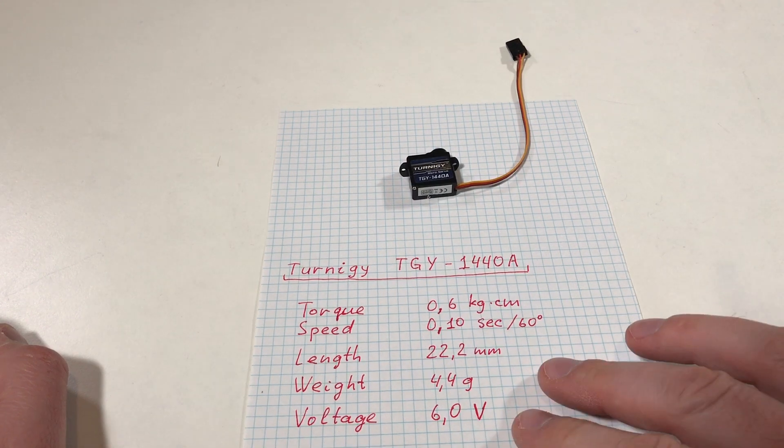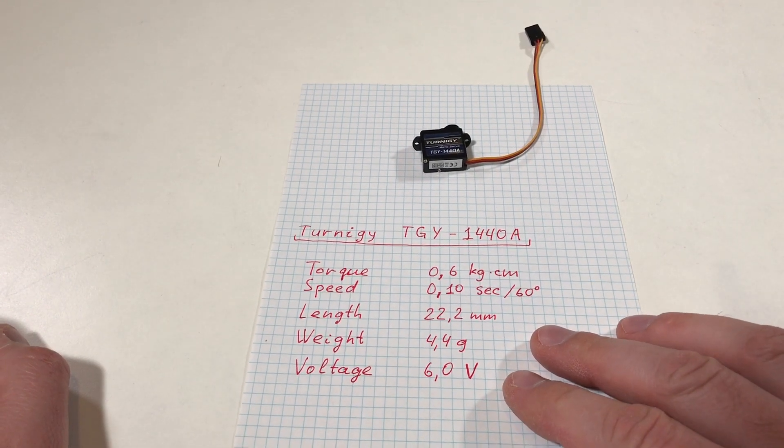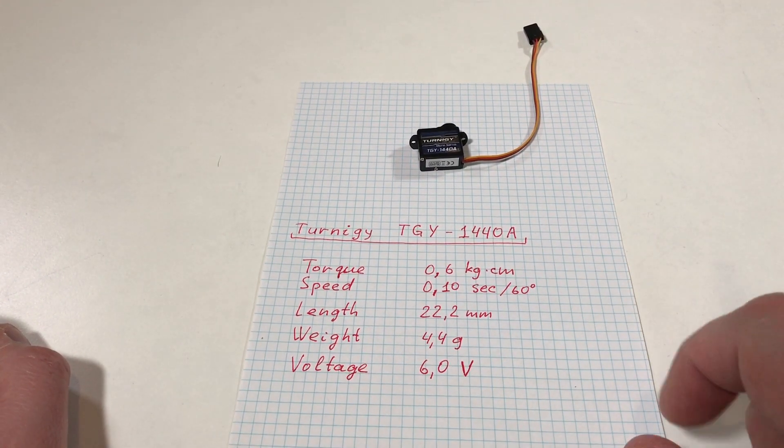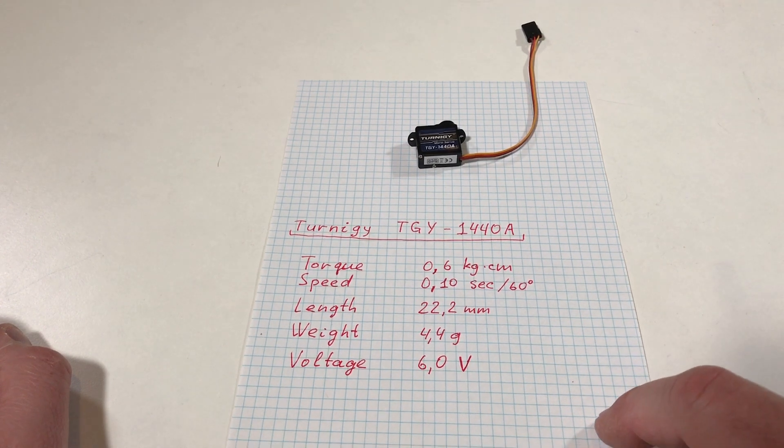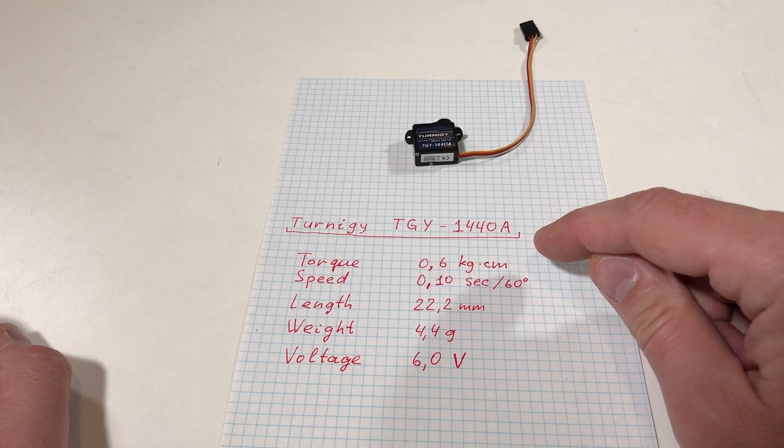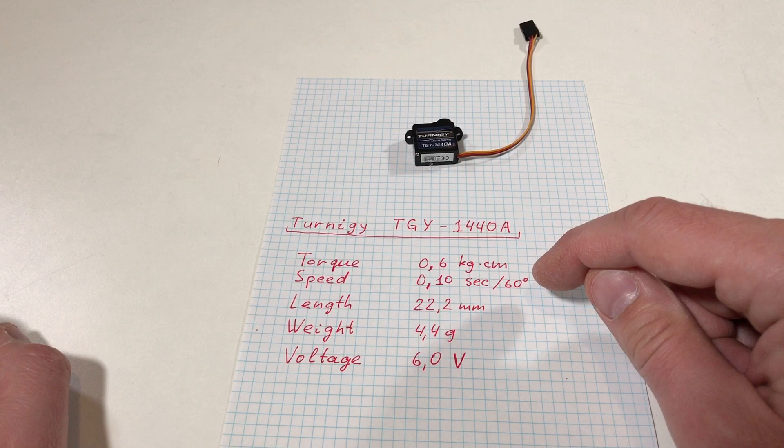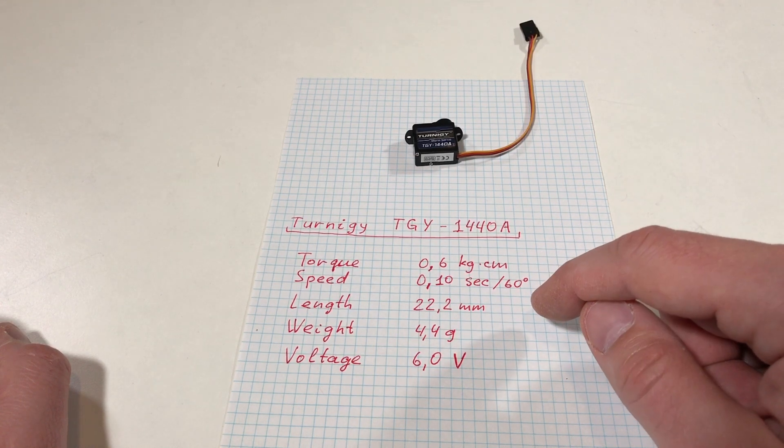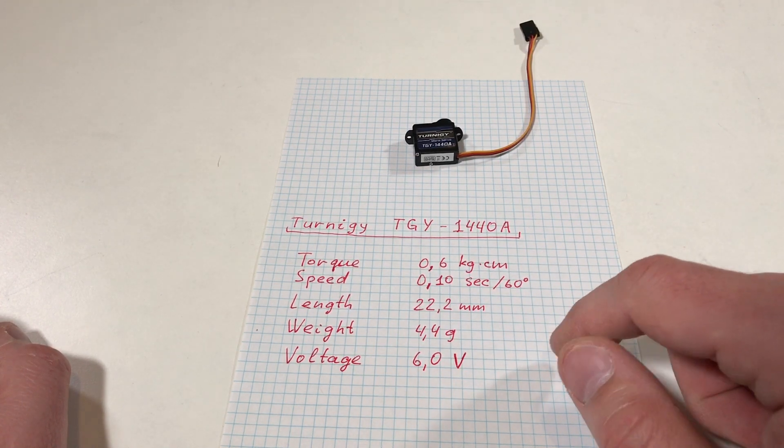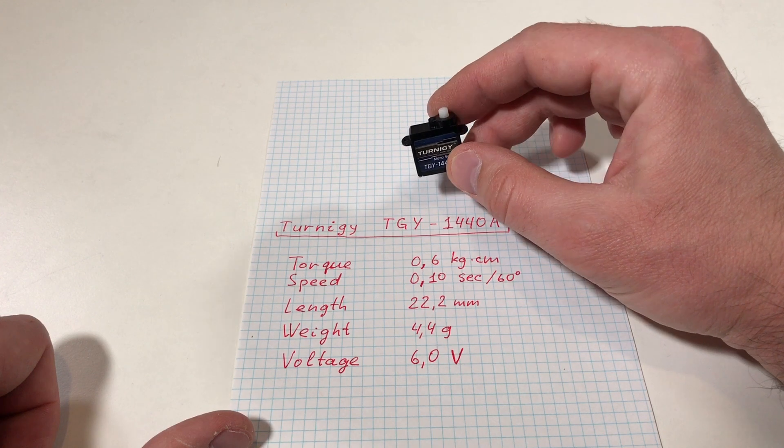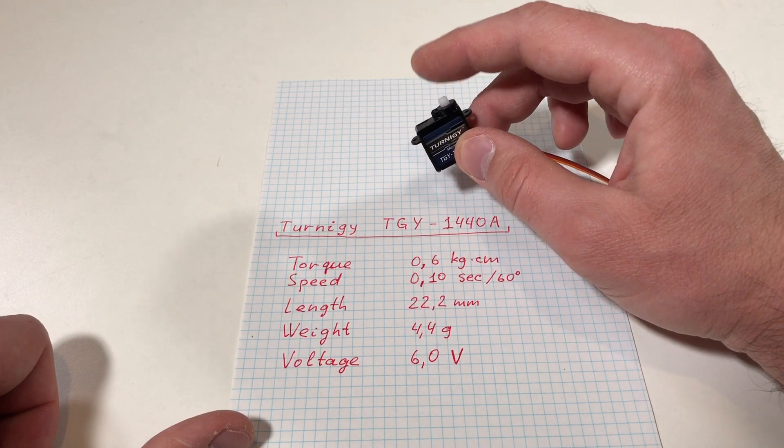The next servo motor is this one, nothing special about it. This one is a rotational servo motor, it's not linear. It has a very low torque of 0.6 kilogram per centimeters, it's quite fast, small, and it requires 6 volt voltage.